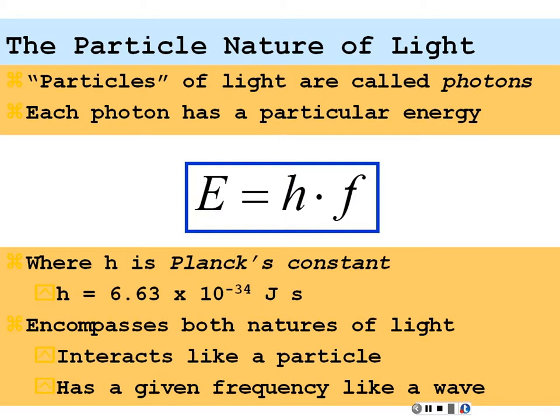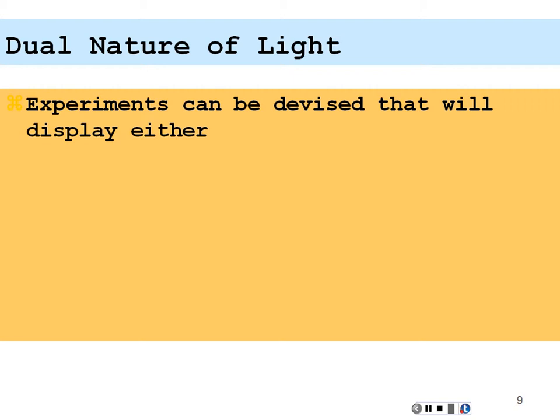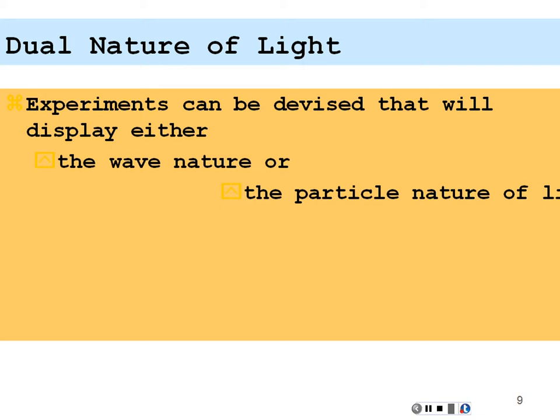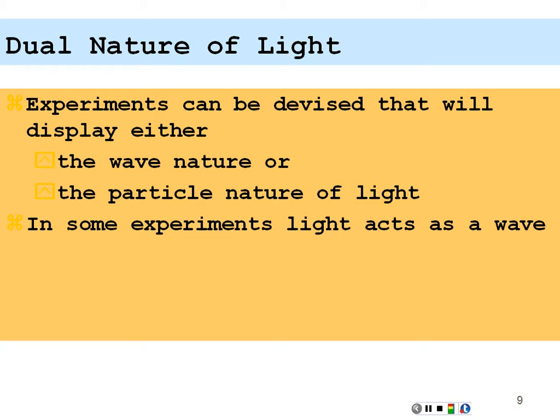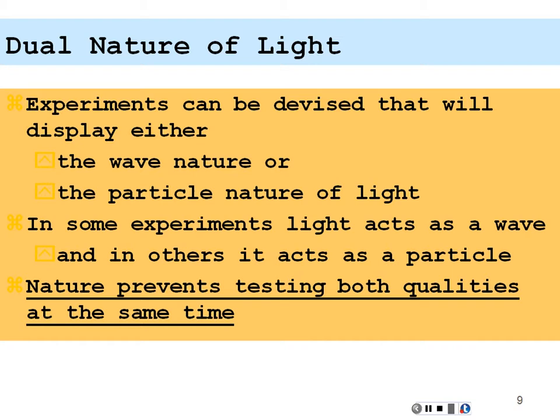Light does have a dual nature. Experiments can be devised that display either the wave nature of light or the particle nature of light. In some experiments light acts like a wave, and in others it acts like a particle. If you devise your experiment to look for light as a wave, you will find it as a wave; if you devise it to look for a particle, you will find a particle. Nature prevents testing both qualities at the same time — it depends on what you're looking for, and you can only look for one at a time.